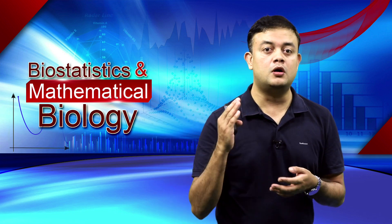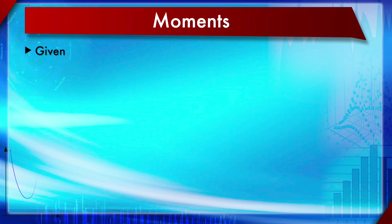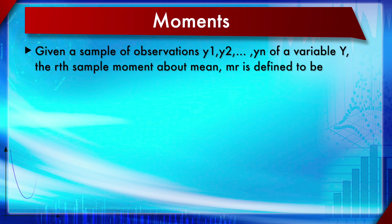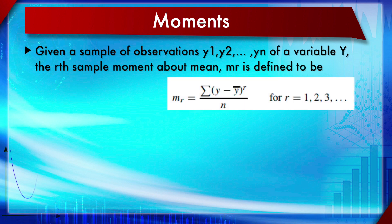In the third step of that process, we squared the deviations about the sample mean — raising to the power of two. This is known as the second moment, because you are squaring it. The third moment means you are cubing it. So, given a sample y1, y2, ..., yn, the r-th sample moment about the mean m is defined as the sum of (y minus y-bar) to the power r, divided by n.